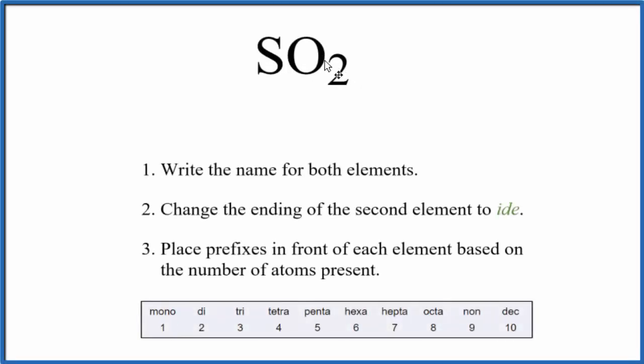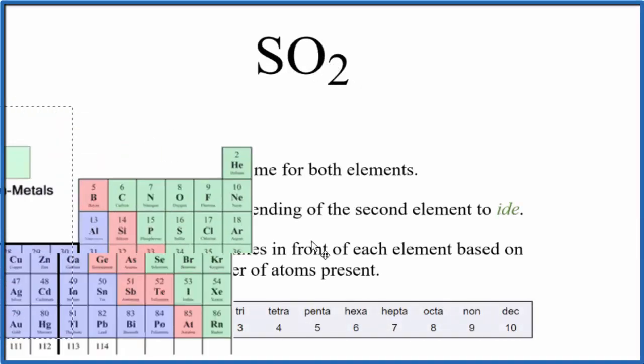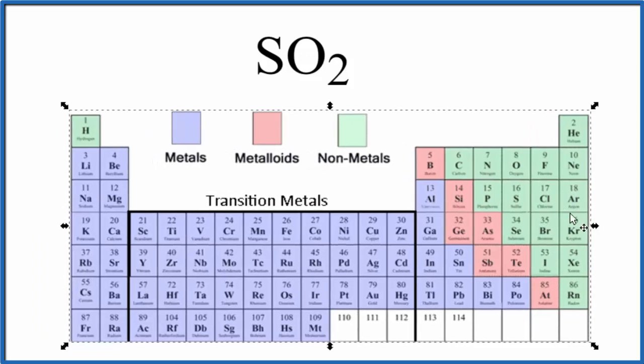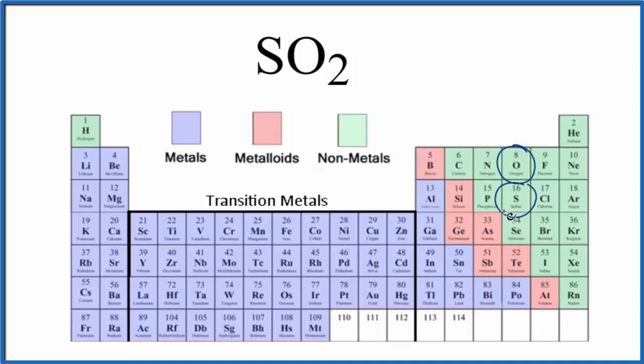To write the name for SO2, we first need to realize that this is a molecular or covalent compound. And we can tell because we have oxygen and sulfur. These are both nonmetals. So when we have two nonmetals, that's a molecular or covalent compound.